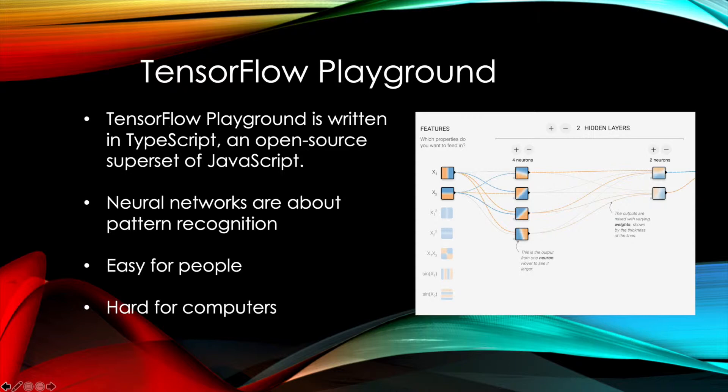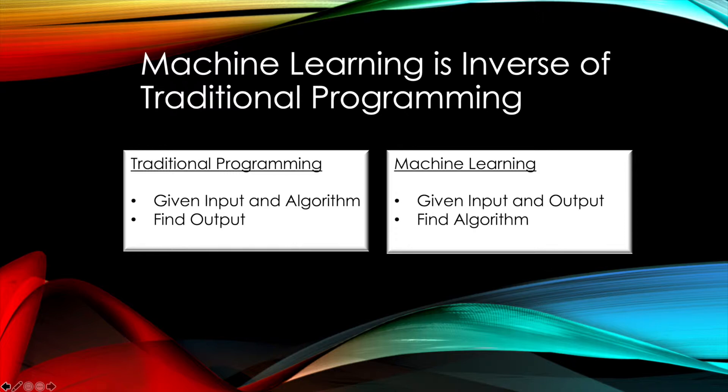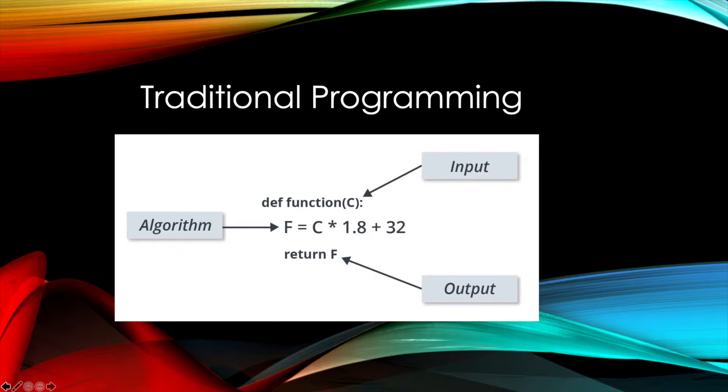So in traditional programming, we say given an input and our algorithm, we find the output by putting the input into the algorithm and crunching it and finding what we got. In machine learning, we have really the opposite. Given an input and an output, we want to find the algorithm that produces the output from the input. And so those inputs are called features. So here we have a simple function in programming language that would compute Fahrenheit degrees given Celsius degrees in the conversion formula, and here we see the input, the output, and the algorithm.